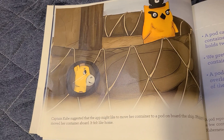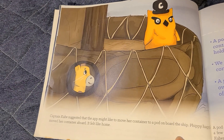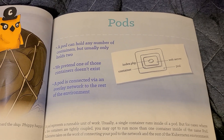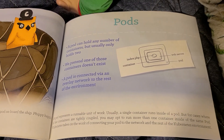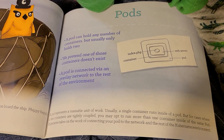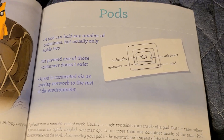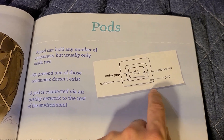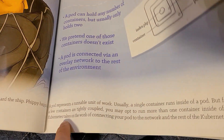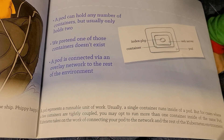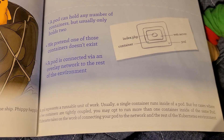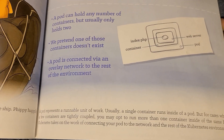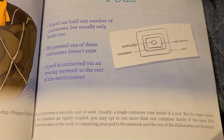Captain Cube suggested that the app might like to move her container to a pod on board the ship. Pippi happily moved her container aboard. It felt like home. A pod can hold any number of containers, but usually only holds two. A pod is connected via an overlay network to the rest of the environment. The index.php is inside the web server, inside a container, inside the pod. A pod represents a runnable unit of work. Usually a single container runs inside of a pod, but for cases where a few containers are tightly coupled, you may opt to run more than one container inside of the same pod. Kubernetes takes on the work of connecting your pod to the network and to the rest of the Kubernetes environment.